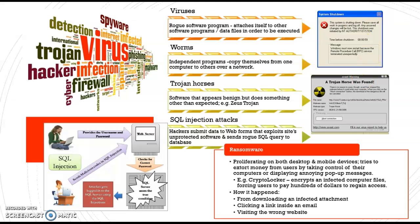And then we have Trojan Horse. A Trojan Horse is software that appears benign but does something other than expected. An example is a Trojan — is it dangerous? Yes, it is dangerous. This is an example of a Trojan.